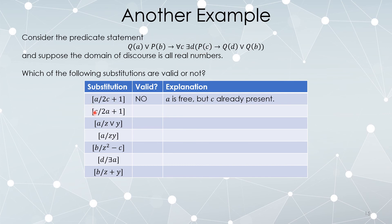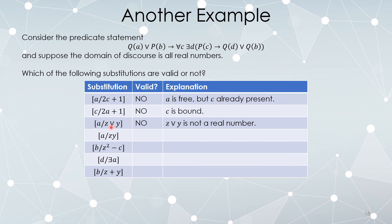Can I replace every instance of C with 2A plus 1? No — I cannot replace bound variables. Can I replace every instance of A with Z or Y? No — Z or Y is not a real number; it's not in our domain of discourse. I could replace A with Z, or replace A with Y, but I can't replace it with the collection of symbols 'Z or Y'. Similarly, 3 or 10 is not a real number — 3 is a number, 10 is a number, but '3 or 10' is not a real number.